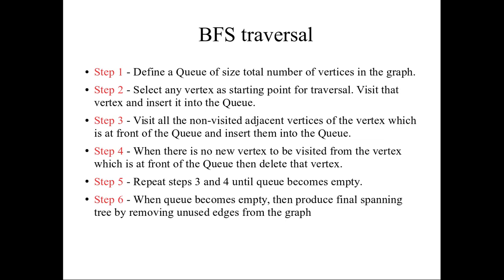First step: you have to define the queue with the total number of vertices in the graph, which means the size of the queue is equal to the number of vertices. Second, you have to select any vertex from the graph as a starting point. Then visit that vertex and insert it into the queue. Next, visit all the non-visited adjacent vertices of the node at the front of the queue and insert them into the queue.